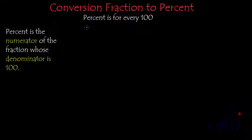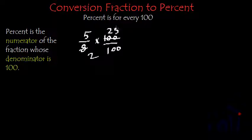So suppose if I want to convert 5 by 8 into percent, what will I do? I will multiply it by 100 by 100. 4 to the 8, 4 to the 8, 4 fives are 25, 2 ones are 2, 2 to the 4, 2, 5 is 10.